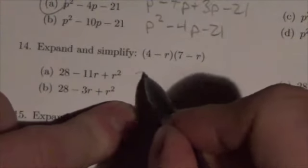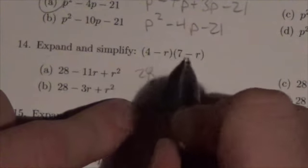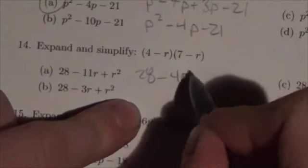So 4 times 7, 28, 4 times negative r will be negative 4r.